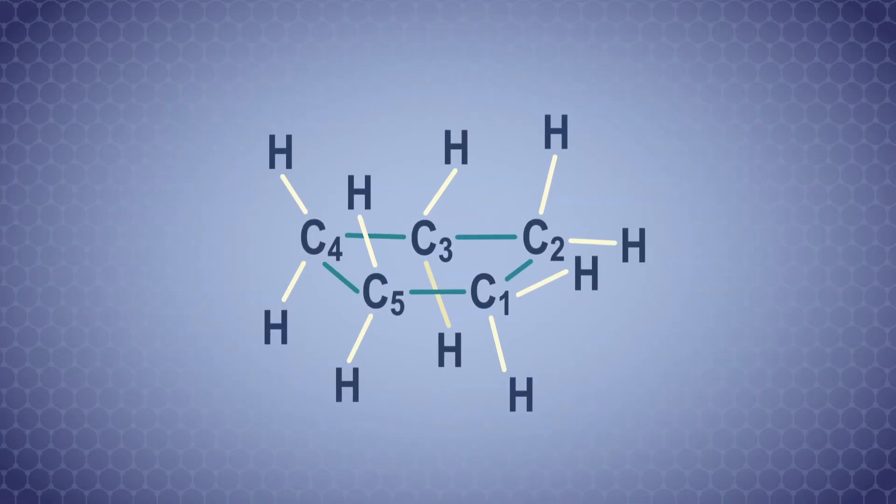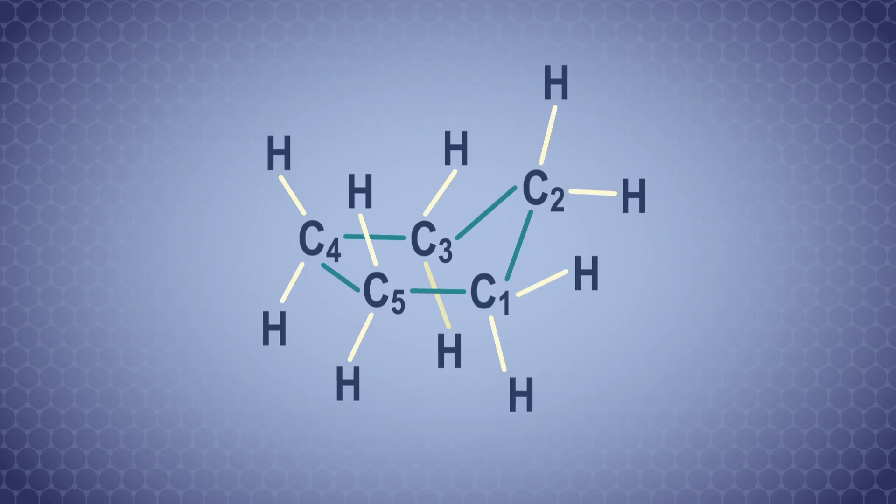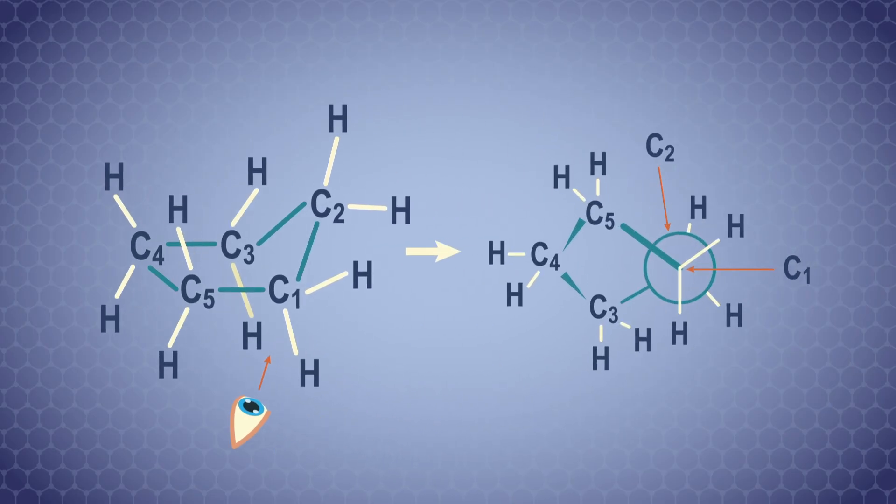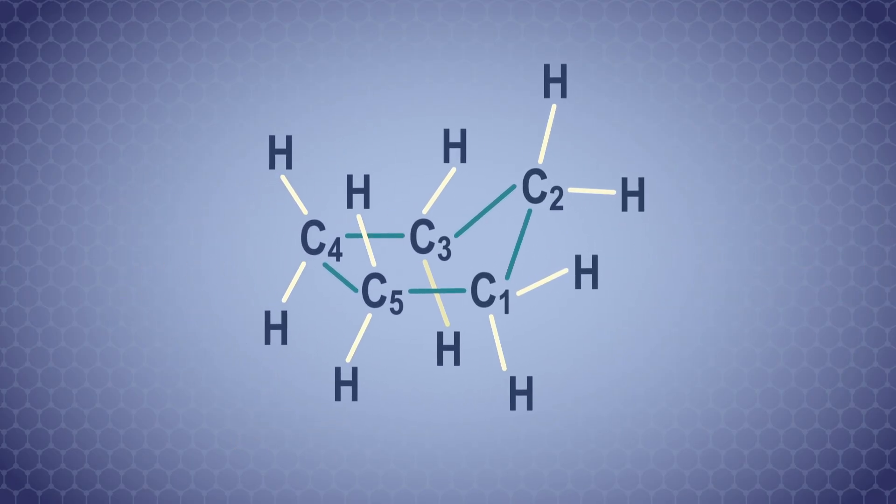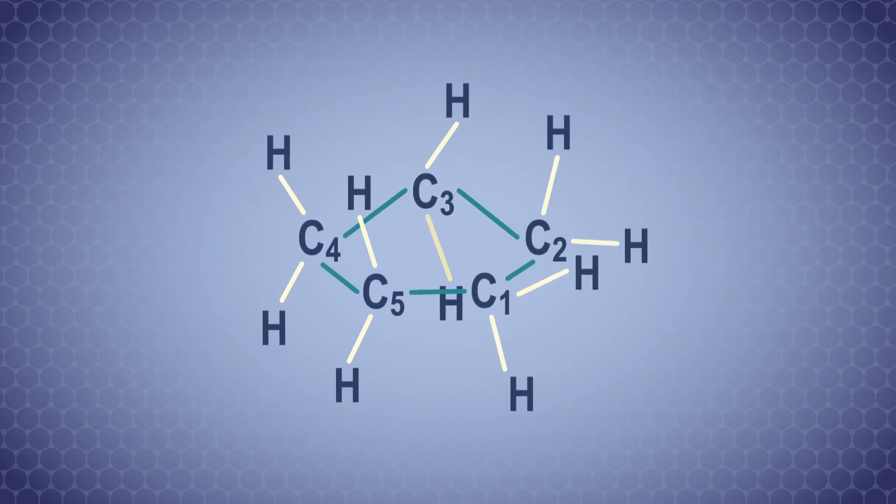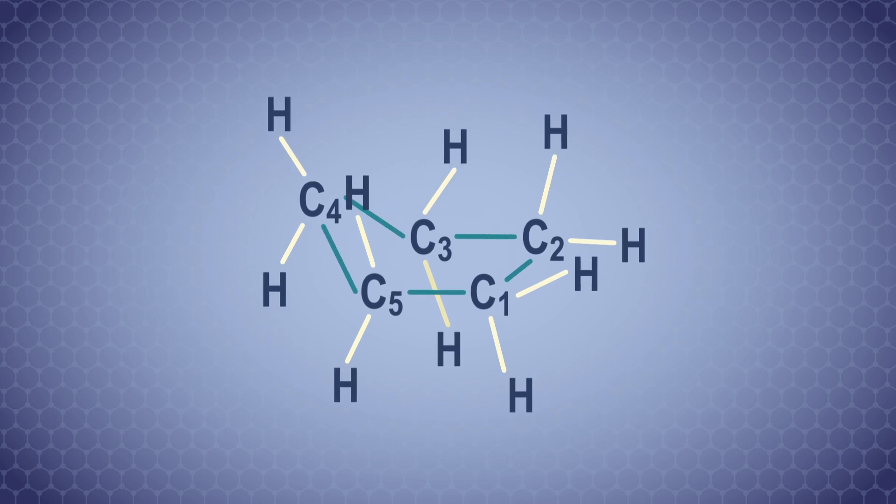A puckered cyclopentane molecule pokes one carbon atom above the molecular plane, forming an envelope conformation. We can see this a little better by looking at a Newman projection along one of the bonds. The thing about any molecular drawing or model is that they're static instead of the vibrating, moving molecule of reality. So the pucker of cyclopentane isn't stuck on one carbon. Each carbon takes a turn poking above the molecular plane, so the molecule is kind of constantly wobbling around.